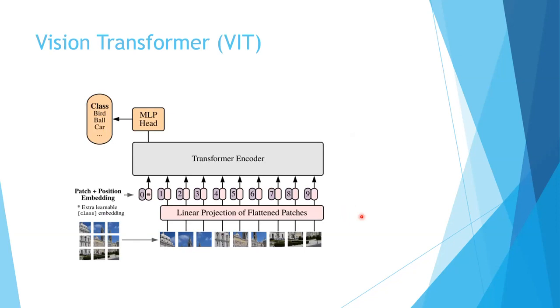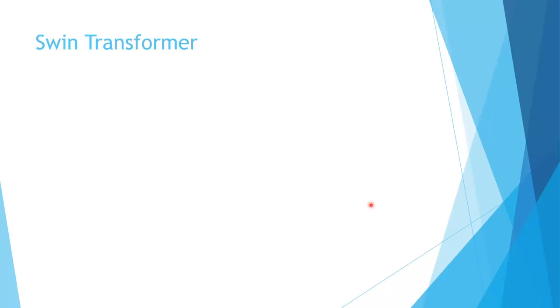Next we look at the vision transformer, which applies the transformer model to images. It does this by dividing the image into equal-size patches, which are then fed into the transformer model through a linear projection combined with positional encoding. Self-attention is computed on these image patches, allowing the model to learn long-range dependencies and structures not possible through a purely convolutional approach. However, the problem with vision transformers is that since the attention computation has quadratic complexity with respect to the size of the input, the vision transformer suffers in performance for large images as the number of input patches increases. Also, the patches computed in the vision transformer do not overlap, so information from adjacent patches which might be linked is not captured.